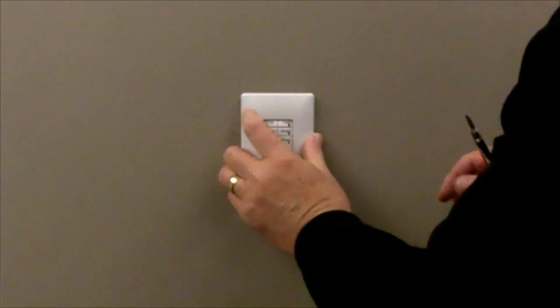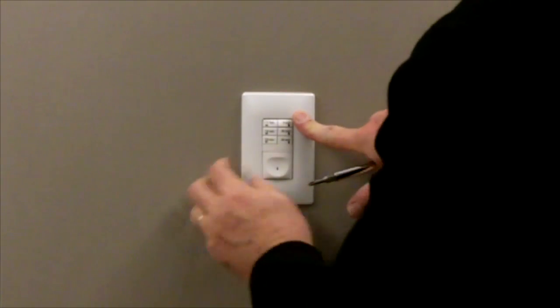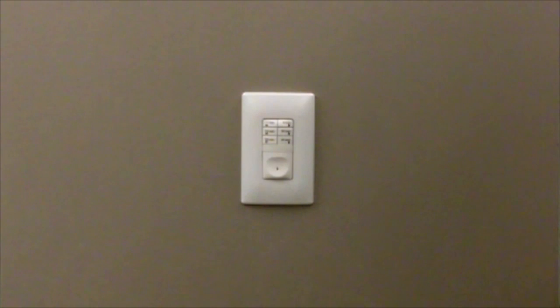Attach the new cover plate to the wall box. Restore the electrical power to the circuit by turning on the breaker or replacing the fuse.